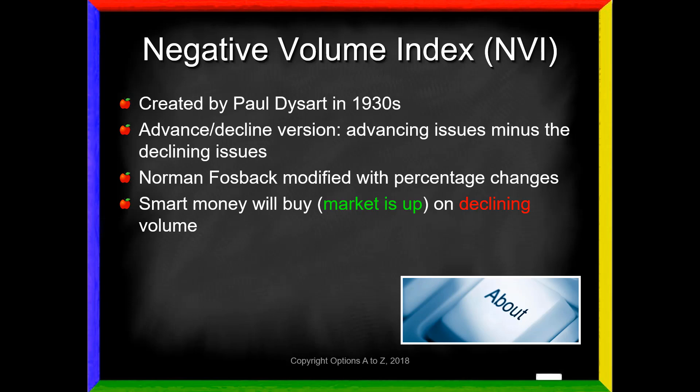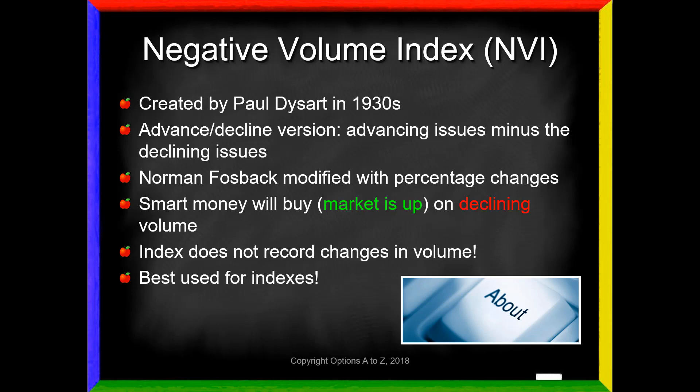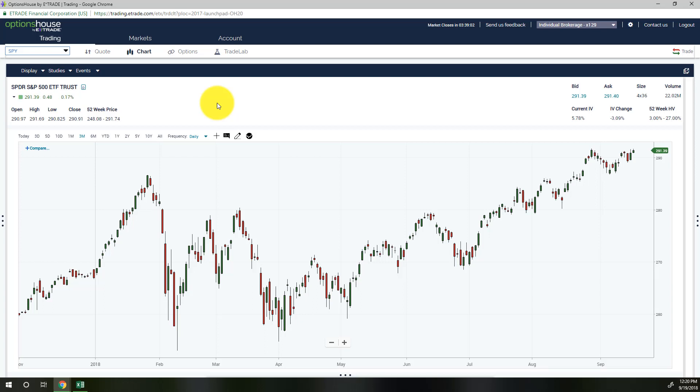The market is up when volumes are down — that's what the NVI is trying to record. It's important to emphasize that the index does not record changes in volume. It's called the Negative Volume Index, but it has nothing to do with volumes directly; volumes are just the trigger. What it records are changes in the market. It's best used for indexes like the S&P 500 or NASDAQ 100. For individual stocks you'll get a lot of false signals.